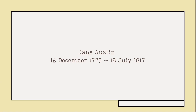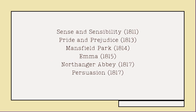Jane Austen was born December 16, 1775, and died July 18, 1817. There are six books primarily attributed to her, beginning with Sense and Sensibility, Pride and Prejudice, Mansfield Park, Emma, Northanger Abbey, and Persuasion. All of these books were written within a six-year period, and the last two were actually published after her death.